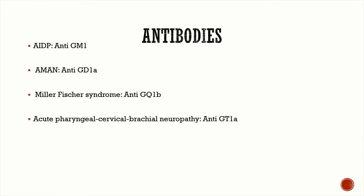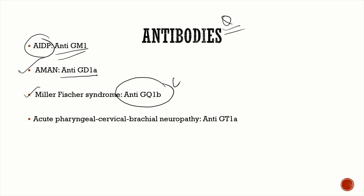Regarding antibodies: AIDP is associated with anti-GM1 antibodies. Acute motor axonal neuropathy (AMAN) is associated with anti-GD1a antibodies. Miller-Fisher Syndrome is associated with anti-GQ1b antibodies — a very frequently asked MCQ. The localized variant of AMAN, acute pharyngeal-cervical-brachial neuropathy, also has anti-GD1a antibodies.